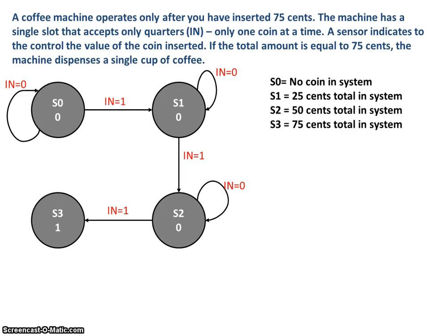Once we're in S3, the coffee has been brewed, so the machine should go back to its initial state and wait for another person to start entering coins. Regardless of whether somebody enters a coin or not when you're in S3, on the next edge of the clock, the machine immediately goes from S3 to S0. So here's our state diagram.